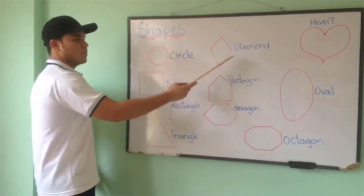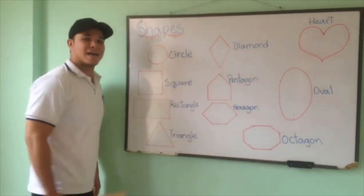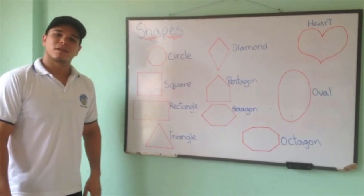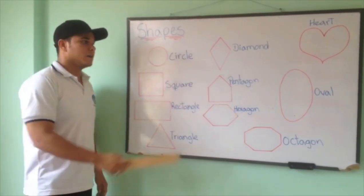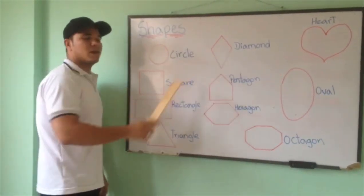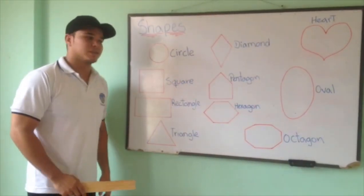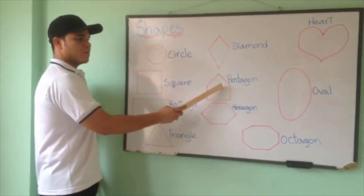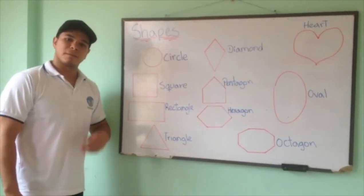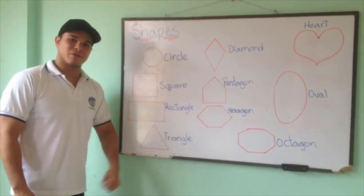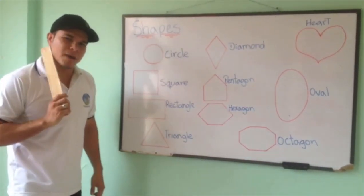Then we have a diamond. Diamond. It also can be a rhombus. Then we have a pentagon. Pentagon.